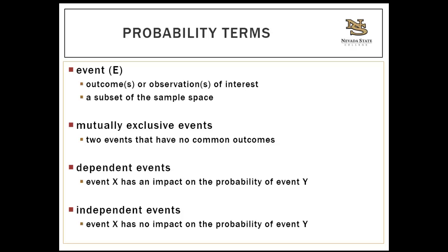Dependent events are when event X has an impact on the probability of event Y. For example, what is the probability that someone will walk in when they are in good condition? Presumably, one's condition has an influence on the method of arrival — if you're in good condition, you're probably more likely to walk in than if you're in serious condition. Those are dependent events.